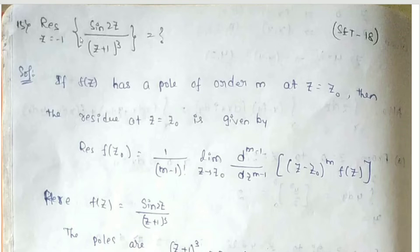So today's first question is: find the residue of sin(2z) upon (z+1)³ at z equals to minus 1.